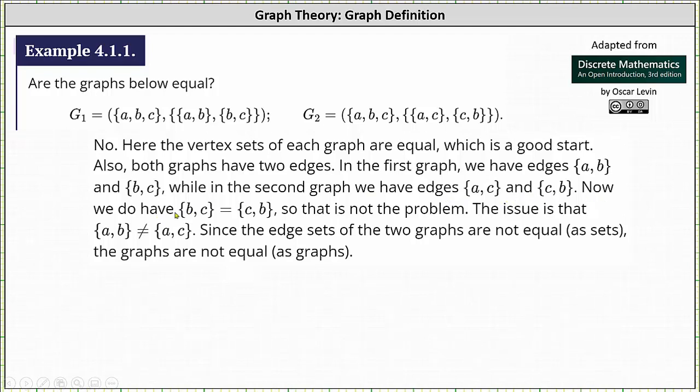Now, we do have edge {B, C} equals edge {C, B} because the two sets are equal. Remember, the order doesn't matter, so that's not a problem. The issue is that the set {A, B} doesn't equal the set {A, C}, meaning the two edges are different. Since the edge sets of the two graphs are not equal as sets, the graphs are not equal as graphs.